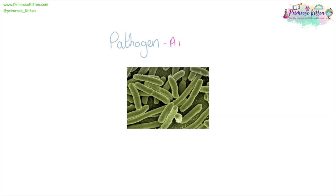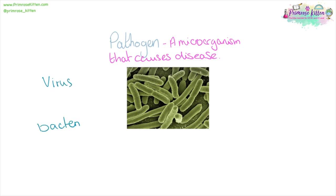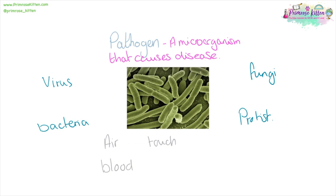A pathogen is a microorganism that causes disease. For example, we can have viruses, bacteria, fungi, or protists. These can be spread in a number of different ways — they can be spread in the air, for example by coughing, or by touch if you have bacteria on your hands and touch a table that someone else then touches. They can also be spread through blood, sexual fluids, or transferred via a vector like a mosquito.